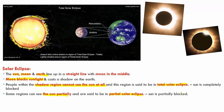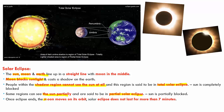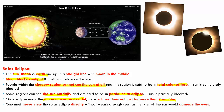Once the eclipse ends, the moon moves on in its orbit and more of the sun becomes exposed. The eclipse does not last for more than 7 minutes — it takes just 7 minutes for the eclipse to be done and over. Children, you should never look at a solar eclipse directly with your eyes because it can damage your eyes. You have to wear solar sunglasses in order to see an eclipse.